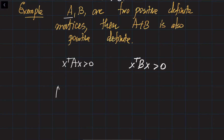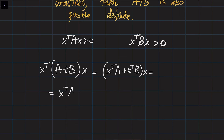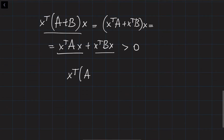Now, X-transpose times (A plus B) times X should be positive for A plus B to be positive-definite. Opening the brackets, it becomes X-transpose A X plus X-transpose B X. Since each term is positive, the overall sum is also positive. It means that X-transpose (A plus B) X is positive, so A plus B is positive-definite.